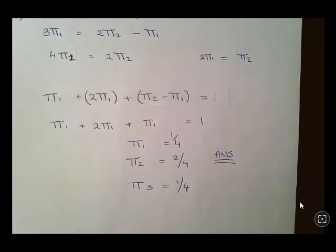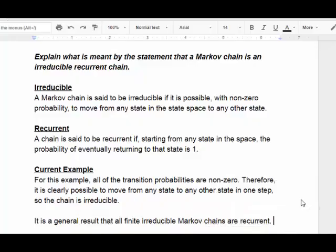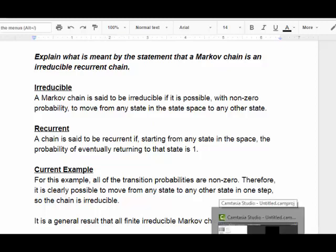So that's it. We'll leave it there. Actually, I'll just go back to the other video very quickly just to go back to the definition. So yeah, just to go back to the definition. For this example, all of the transition probabilities are there. It's clearly possible to move from any state to any other state in one step. So the chain is irreducible. And it is a common result that all finite irreducible Markov chains are recurrent. Great. So that's it. We'll leave it there.